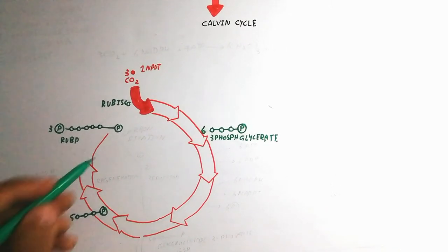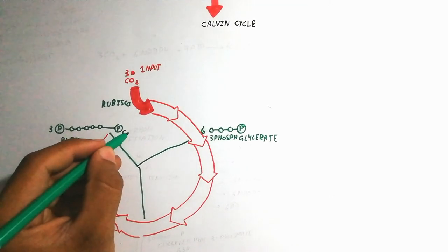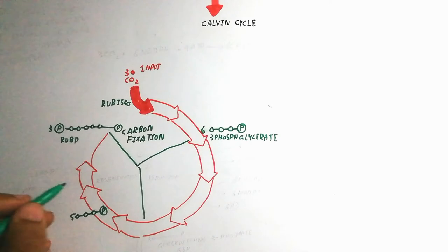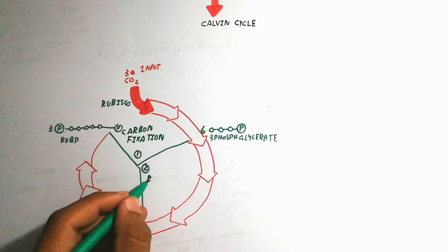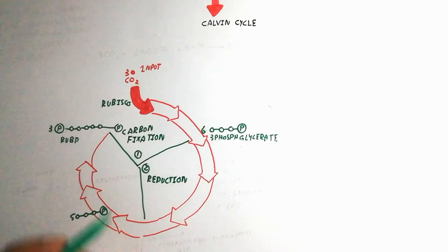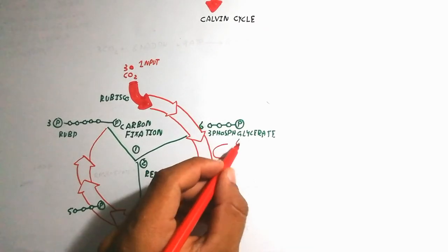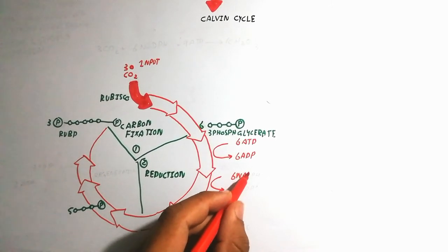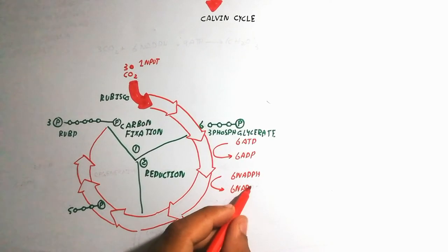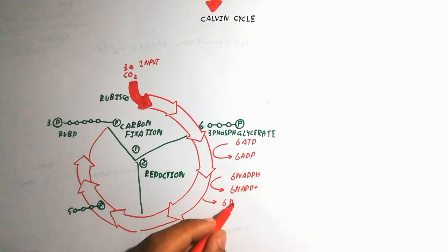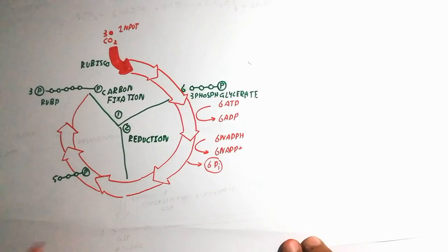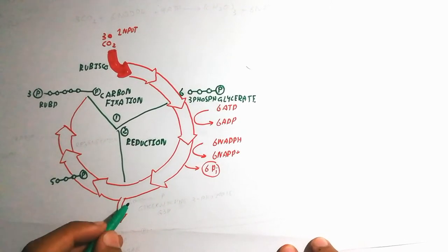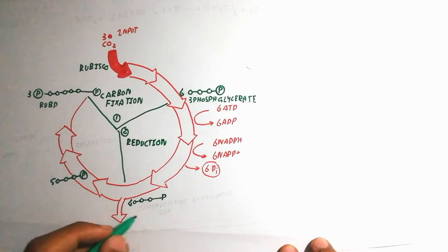The Calvin cycle has three phases. In carbon fixation, three CO₂ molecules are fixed: three ribulose bisphosphate (RuBP, a 5-carbon molecule) react with three CO₂ to produce six molecules of 3-phosphoglycerate (3-PGA). In the reduction phase, ATP is converted to ADP and NADPH is converted to NADP⁺ as the energy is used to produce the sugar glyceraldehyde-3-phosphate (G3P).